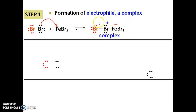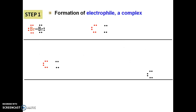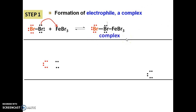So this species we call a complex. In step number one, we want to produce Br+, but Br+ is not stable. We know Br− is stable, but Br+ is not stable to form. Because it is not stable, we stop at the complex form — we do not break this bond to produce Br+. So we stop at the complex, and bring this complex into step number two.